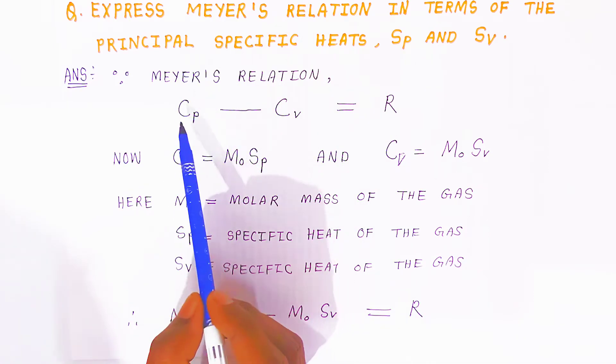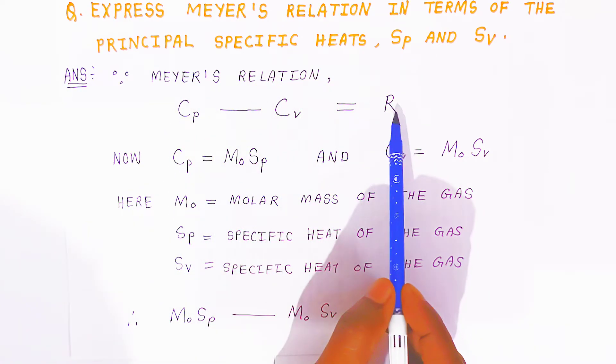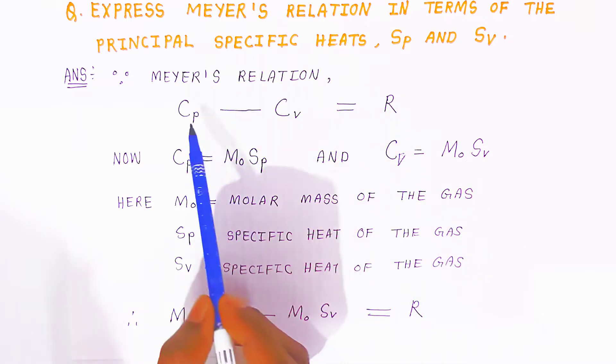Meyer's relation is Cp minus Cv equals R, that is the universal gas constant. Cp minus Cv is nothing but R.